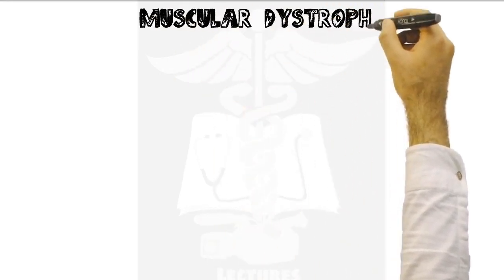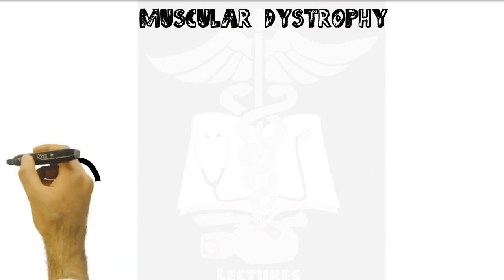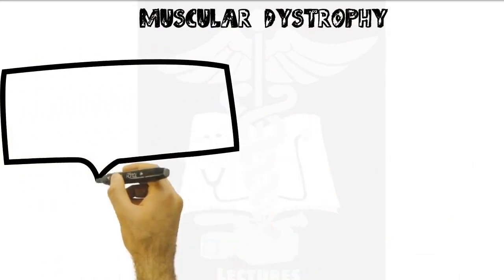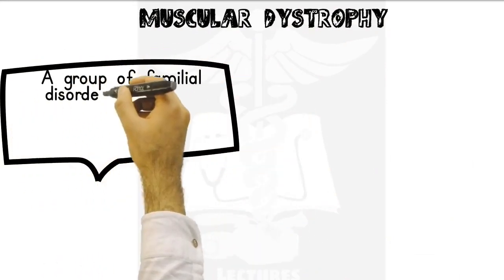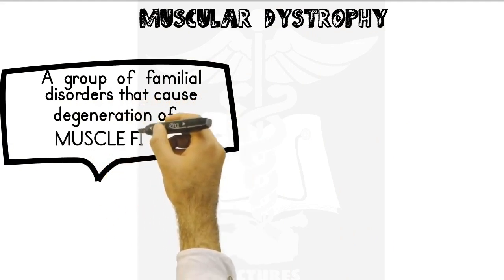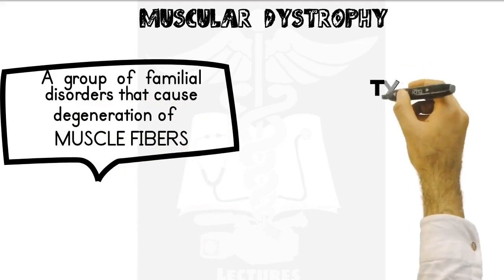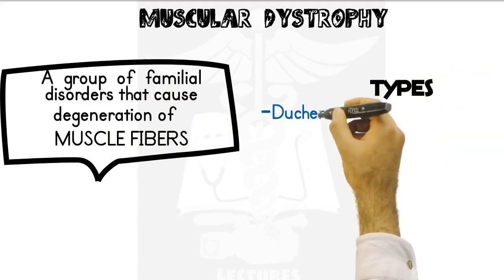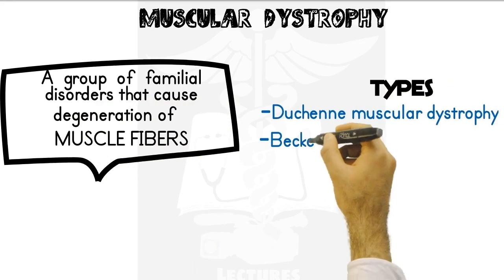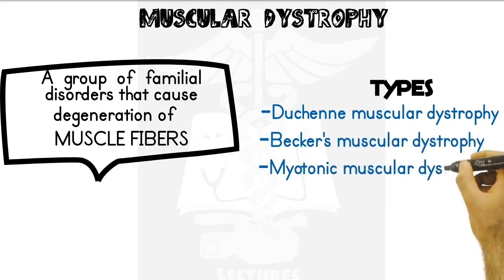In this video, we are going to be looking at muscular dystrophy. Muscular dystrophy is a group of familial disorders that cause degeneration of muscle fibers. There are a few types of muscular dystrophy. The ones we're going to look into are Duchenne muscular dystrophy, Becker's muscular dystrophy, and myotonic muscular dystrophy.